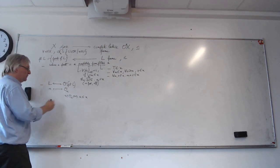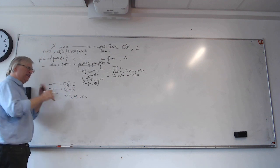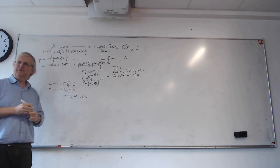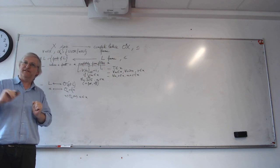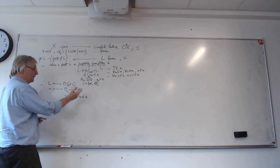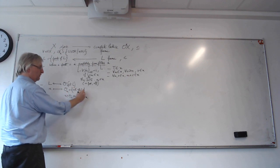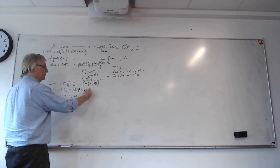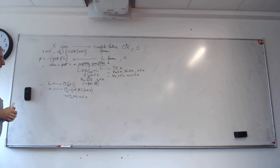By definition, I want O_u to be the set of points — that is, the set of completely prime filters — such that x is in O_u, which I want to be equivalent to: u is in x. So that's it. I'm going to define O_u as the set of points which contain u. That's reverse membership.